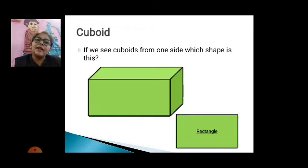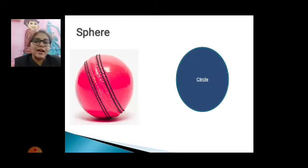Now this is the sphere, sphere means bowl, bowl kaysa hota hai. Agar 2D shape mein dekha jaye toh, bowl hota hai, circle ke jyesha, it looks like a circle.